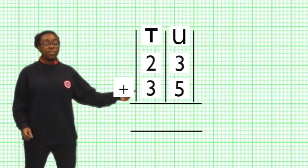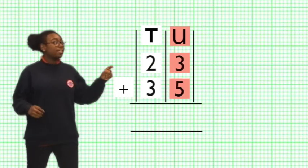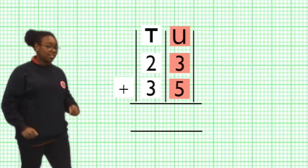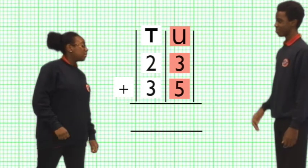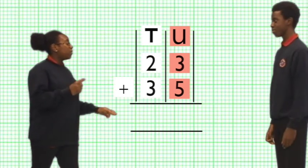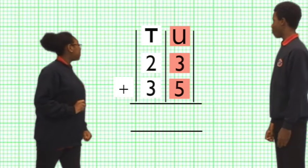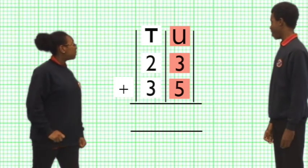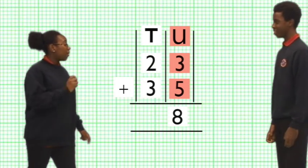Let's start with the units column. Hey Saracen! Add up the units column please. 5 add 3 equals 8. Correct! Yay!